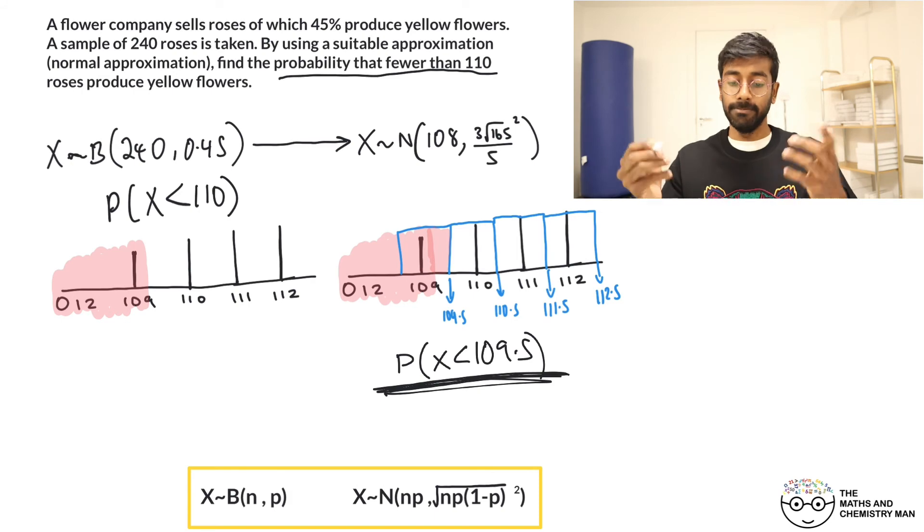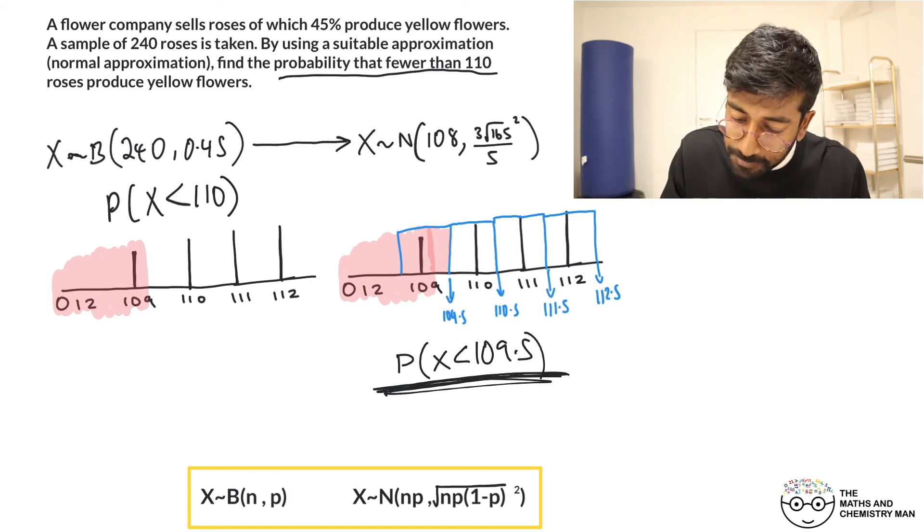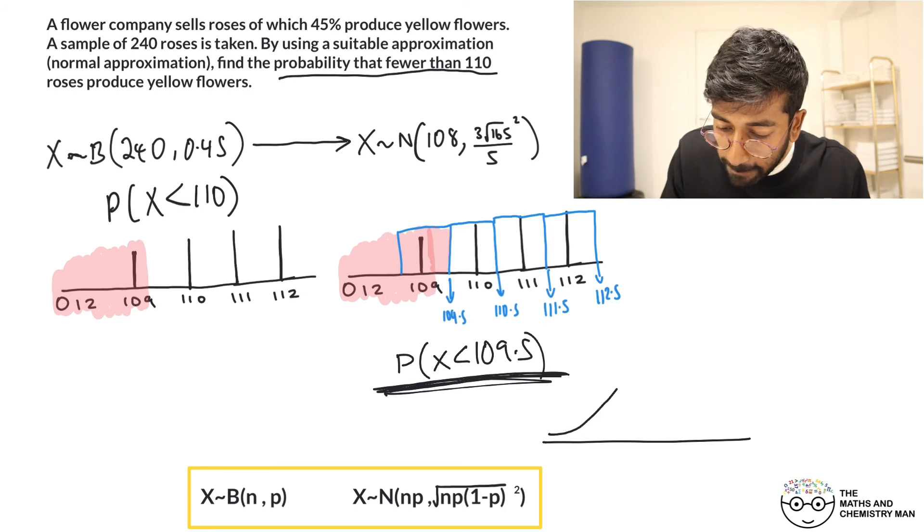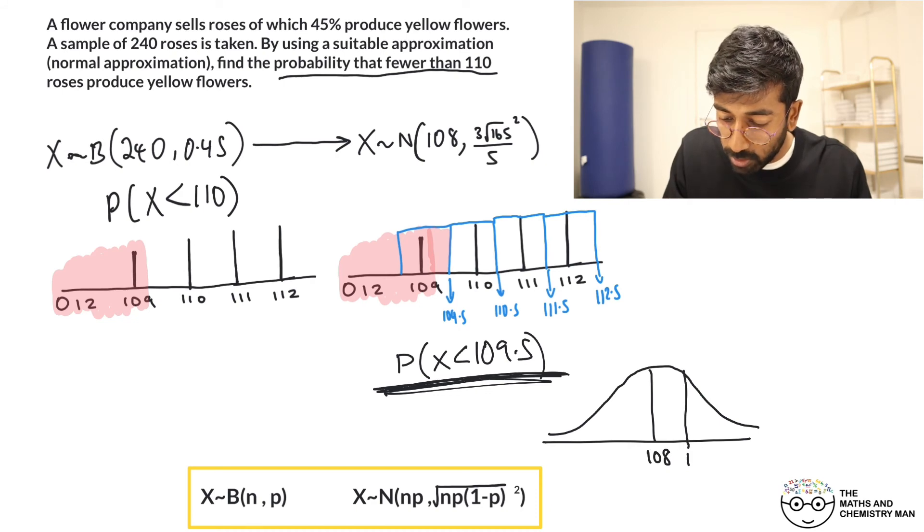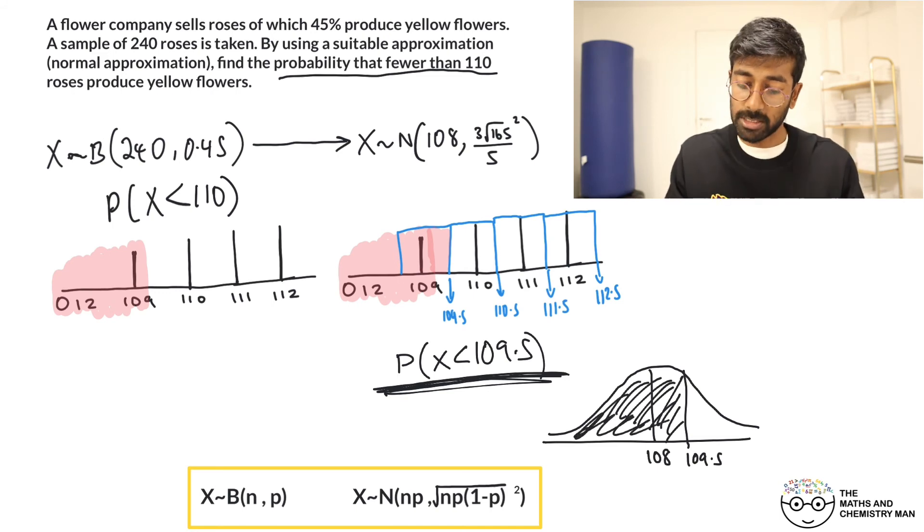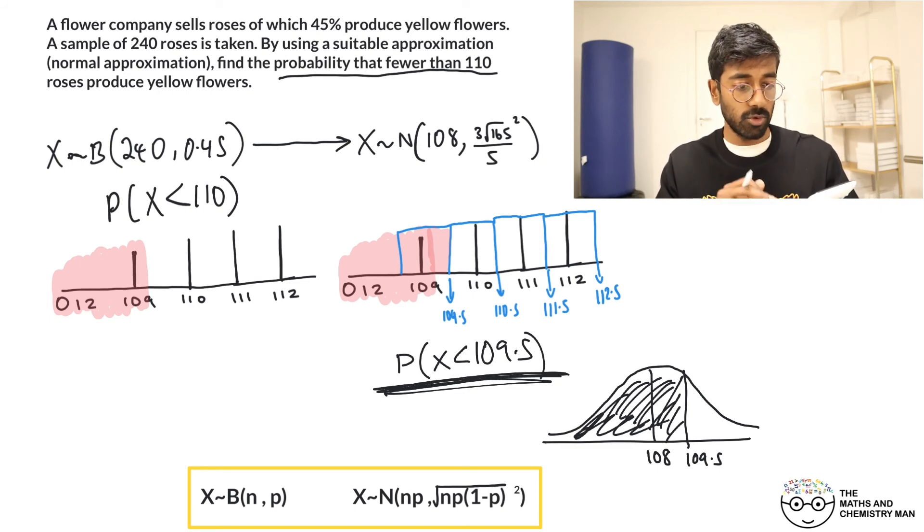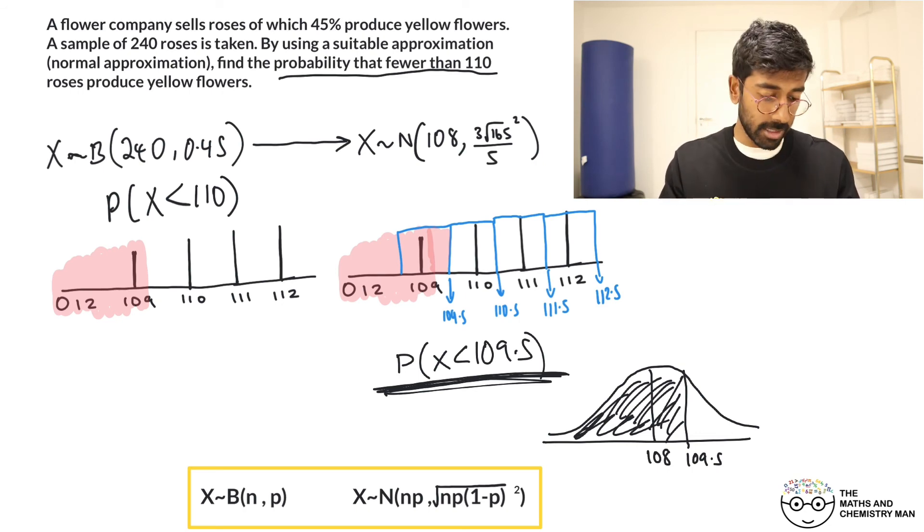So we need to look for this. Now let's make a very quick sketch. So this is a normal distribution and our mean is now 108. We're looking for less than 109.5, so we're looking for all this area to the left over there. So all of this, how are we going to find that? Well, we can use our calculator and we're going to go for the normal CD, so option number seven, normal CD is option number two. What we're going to put in as our lower, our lower is going to be zero, our upper is going to be 109.5.